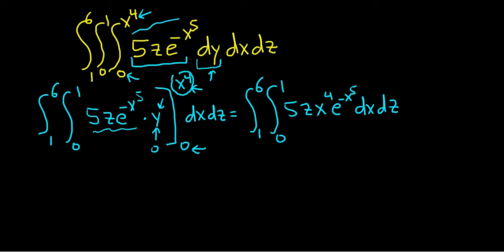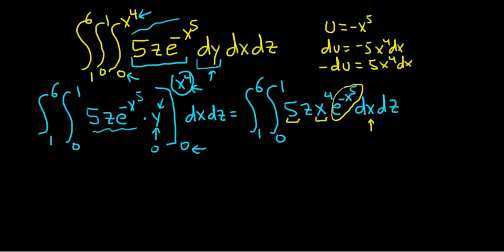So now we're supposed to integrate with respect to x, because the dx tells us to do that. So in order to do that, though, here we have an x to the fourth, and here we have an e to the negative x to the fifth. So we'll do a u substitution, and I'll do it up here. So we'll set u equal to negative x to the fifth. So du is negative 5x to the fourth dx. And then we don't have a negative here, so I'll multiply by negative 1 to make it match the integrand. So negative du equals 5x to the fourth dx. And so now you see we have 5x to the fourth dx, and that's equal to negative du. Let's go ahead and make that substitution.